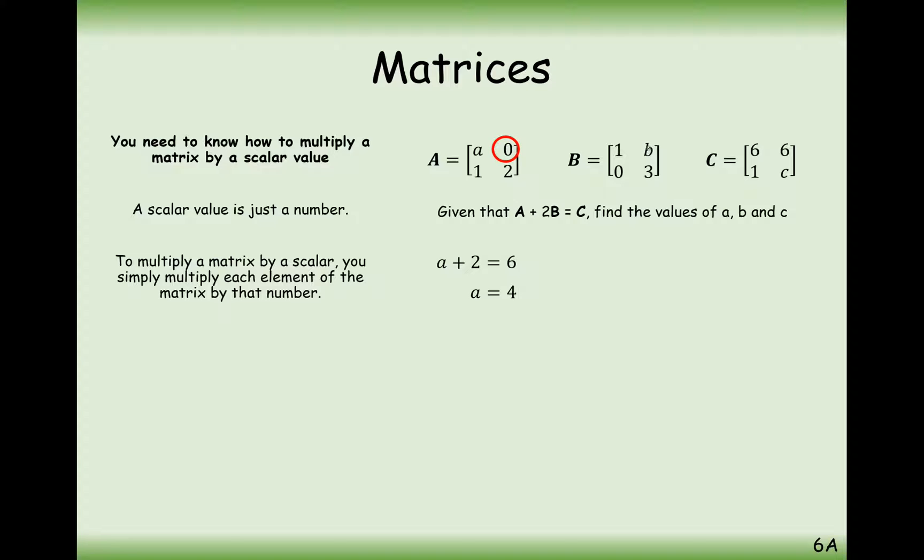B is going to be calculated by looking at the top right-hand cells. So it's 0 plus 2 times B, because that's what it says to do in the question, gives us 6. So 2B equals 6, so therefore B equals 3. And it looks like the bottom left-hand cell sorts itself out. The bottom right-hand cell is what we need to look at next. So it's going to be 2 times 2 add 2 lots of 3 will equal C. So 2 add 6 equals C, so C must equal 8.